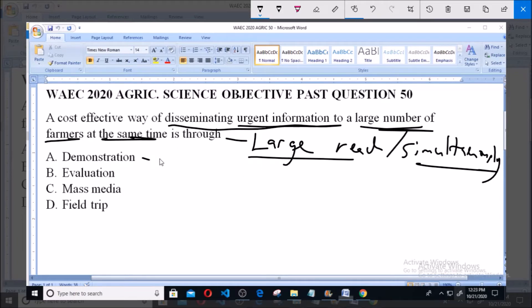Option A says Demonstration. Now, Demonstration basically is a form of display or could even be used to define protest. So this can be used to disseminate information to a large number of people at the same time, so it is not the answer.